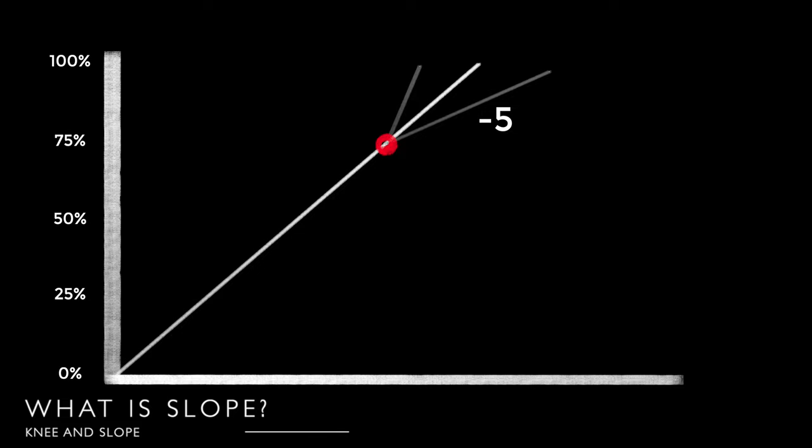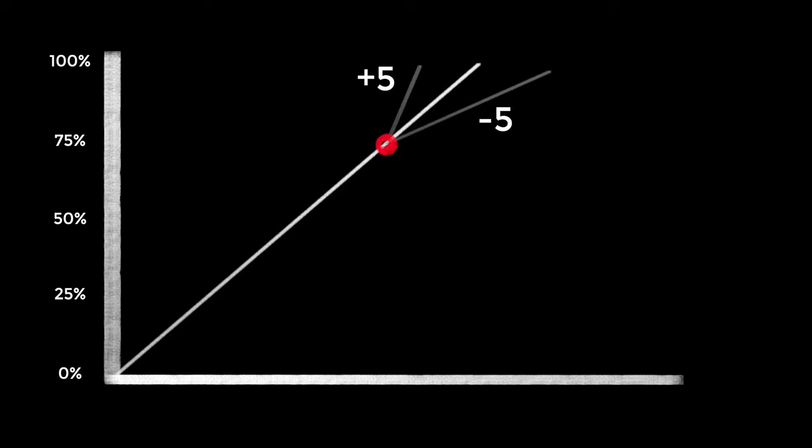To put things simply, knee is the point at which your gamma curve starts rolling off your highlights — incrementally cramming more information into that last brightest part of your gamma curve. Slope is the degree that it rolls off your highlights; a negative slope rolls off more aggressively than a positive slope. Changing the knee setting doesn't extend your dynamic range — it's just about deciding at what point you want your highlights to start compressing and by how much.